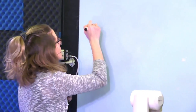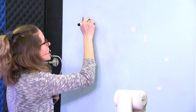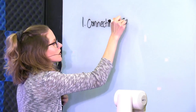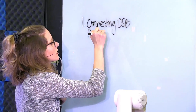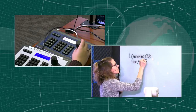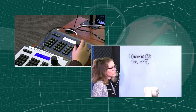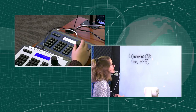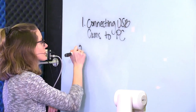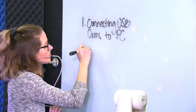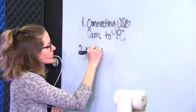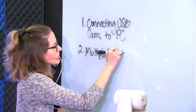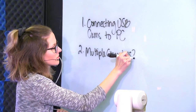Approach number one is connecting multiple USB cameras to your same PC. It's probably the most affordable way, but you have to have the USB bandwidth to do so. If you're using USB 3.0 cameras, you need USB 3.0 ports. Number two, you can actually use multiple computers — two computers in the same room, both with webcams attached, and you can switch in the cloud.